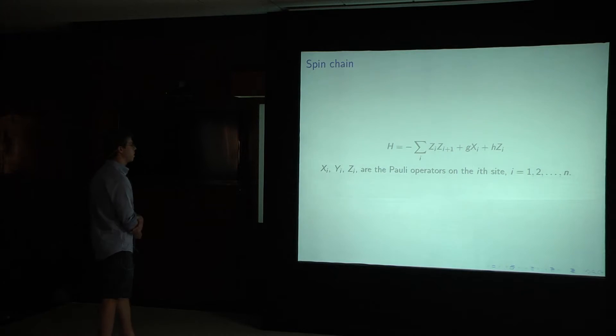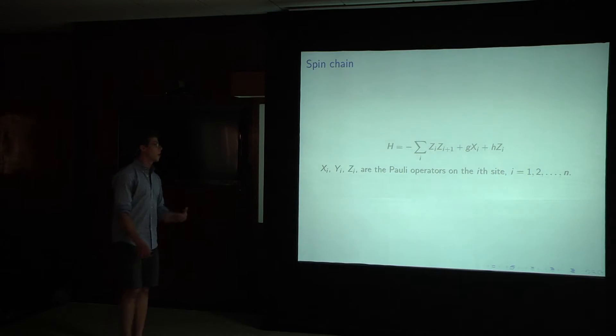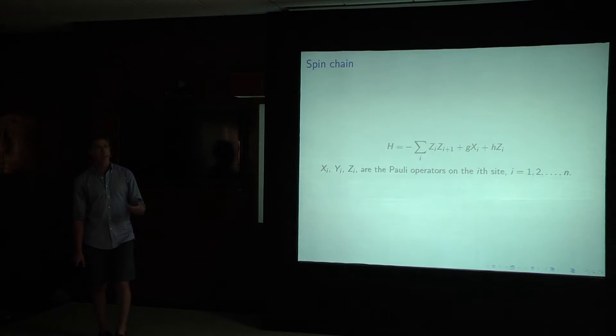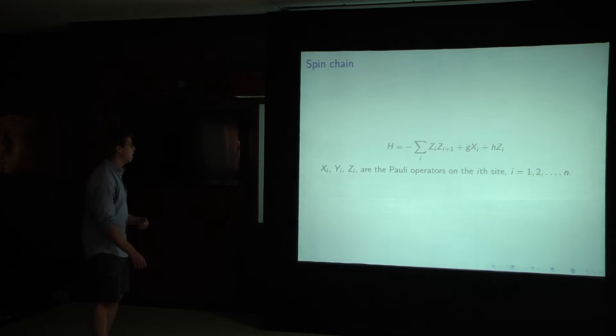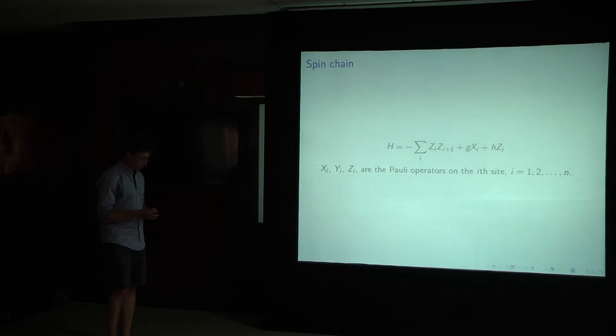So this is the spin chain system I have in mind. My notation is that I'll be using capital X, Y, and Z to stand for the sigma X, Y, and Z Pauli matrices. And the subscript indicates the site on which these matrices are acting, these operators are acting.